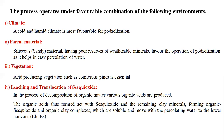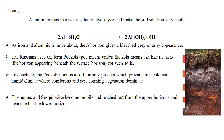During podzolization, decomposition of organic matter produces organic acids, which form soluble organo-sesquioxide and organo-clay complexes that move with percolating water to lower horizons. Under the low pH conditions, aluminum is dissolved, forming aluminum hydroxides and releasing H⁺ ions. The movement of iron and aluminum gives a bleached, ash-like gray appearance in the profile.